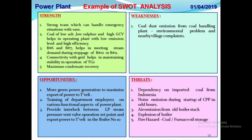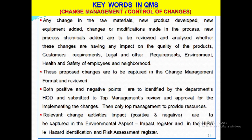What is change management or control of changes? Any change in the procurement of raw materials, new products developed, new equipment added, changes or modifications made in the process, or new processed chemicals added are to be reviewed and analyzed — whether these changes have any impact on the quality of products, customer requirements, legal and other requirements, and environmental health and safety of employees and neighborhood. These changes are to be documented in the change management format and reviewed. Both positive and negative points in the proposed changes are to be identified by the departments and HODs, submitted to top management's review and approved for implementing. Then management provides necessary resources. Relevant change activities and impacts are to be captured in the environmental aspect impact register and also in the HERA — hazard identification and risk assessment register.